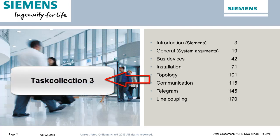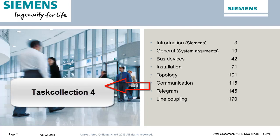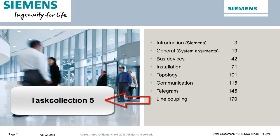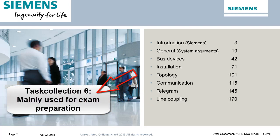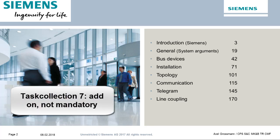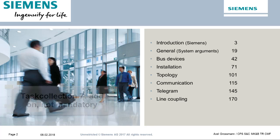After Chapter Topology and Communication, Tasks Block 3. After Chapter Telegram, Tasks Block 4. And after Line Coupling, the Tasks Collection 5, which deals with the line coupler. Task 6, a small project, is in any case processed in the final exam course as an exam preparation, but of course you can also already try it before by yourself. Task 7, DALI Gateway, is completely voluntary — it deals with content that is already at the advanced course level.